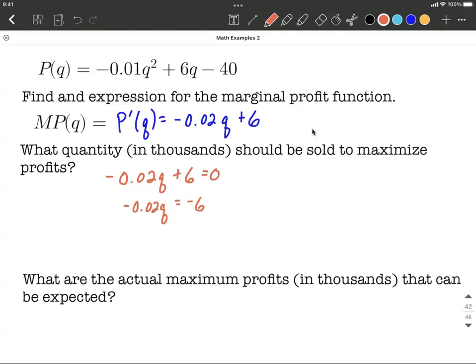Move that to the other side and get negative 6 over there. To get Q all by itself, we'll divide both sides by this negative 0.02. That'll give us Q is equal to 300.